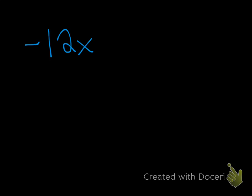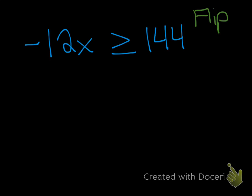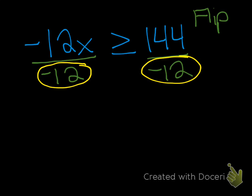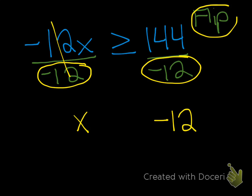One last one: negative 12x is greater than or equal to 144. Again, you're going to divide by a negative number, so make yourself a note — you are going to flip the sign. Divide both sides by negative 12. Writing down that this is negative 12 and this is negative 12 also reminds you to flip it. Those cancel and we have x. 144 divided by negative 12 is negative 12, and because we're flipping the sign, it's going to be less than or equal to.